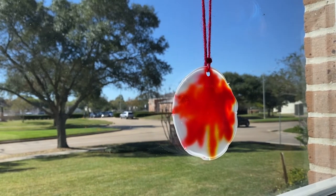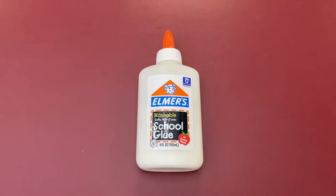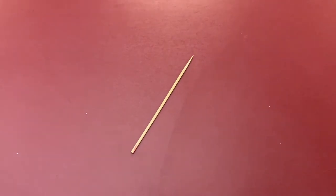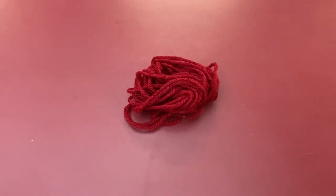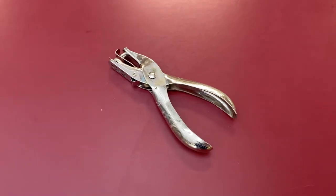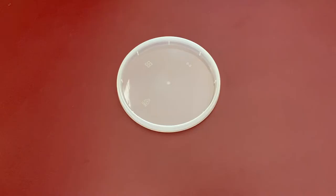The supplies you need to make this craft are school glue, a toothpick, some red and yellow food coloring, some yarn or string, a one-hole punch, and a plastic lid. If you don't have a plastic lid, you can also use a jar lid.